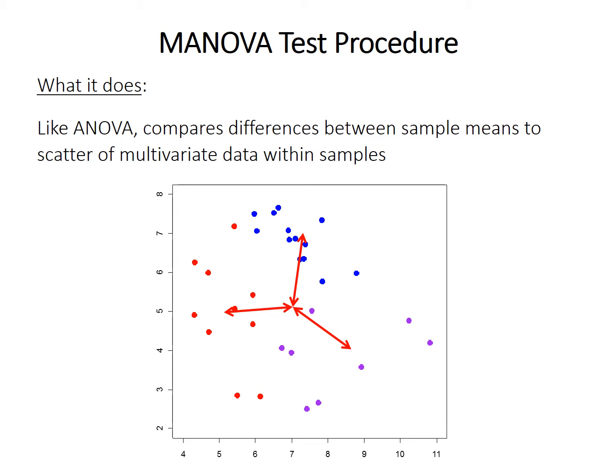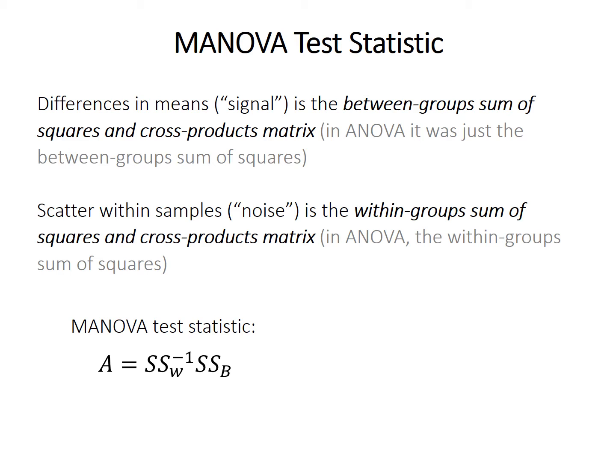Like ANOVA, MANOVA compares the differences between each sample mean and the overall mean relative to the scatter of data within each sample. The difference in means — our signal — is something called the between-groups sum of squares and cross-products matrix. In ANOVA it was just the between-groups sum of squares, but with multivariate data we must consider both the sum of squares within each variable and the cross-products between variables. The scatter of data within samples is called the within-groups sum of squares and cross-products matrix. Like in ANOVA, the test statistic is the ratio of those two matrices, giving us test statistic A.